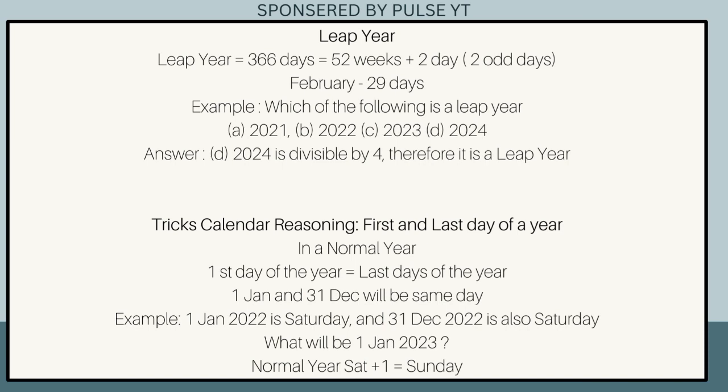Example: Which of the following is a leap year? (a) 2021, (b) 2022, (c) 2023, (d) 2024. Answer: (d) 2024, as it is divisible by 4, therefore it is a leap year.